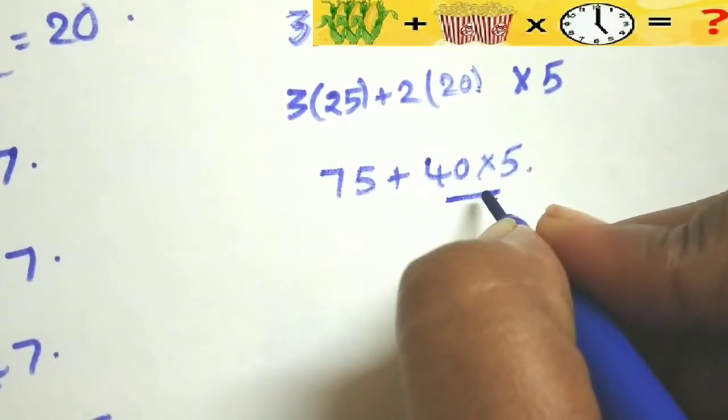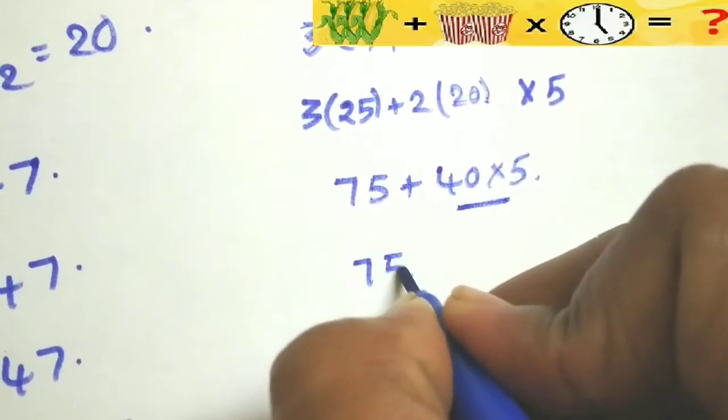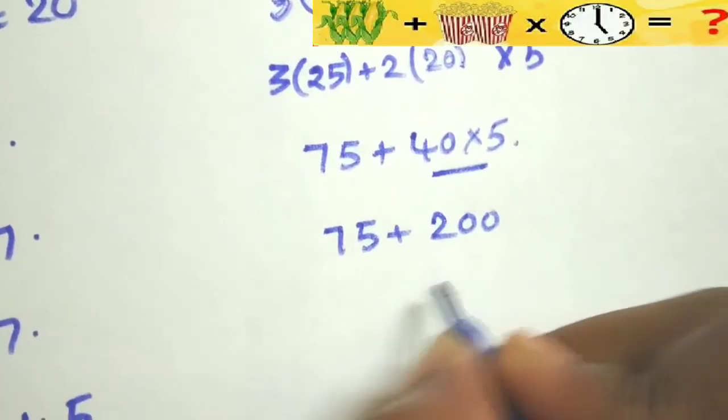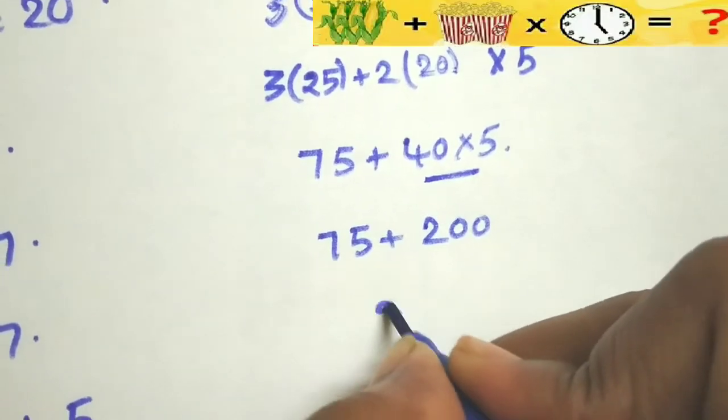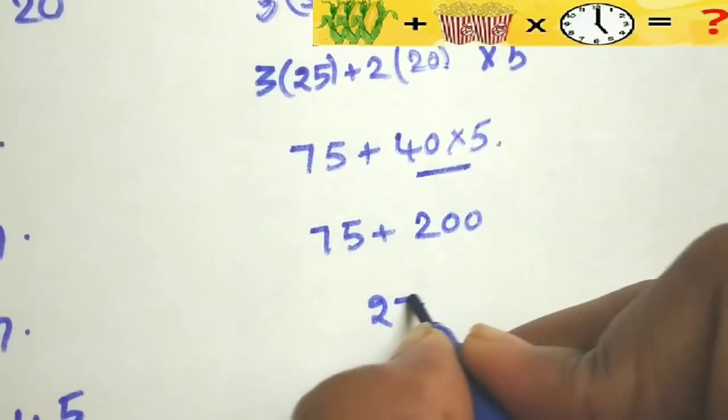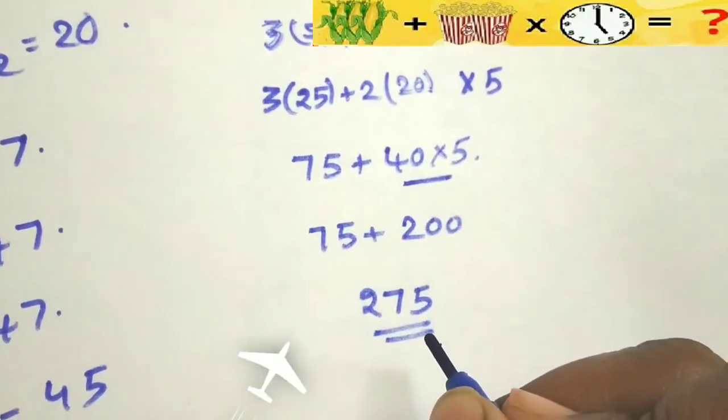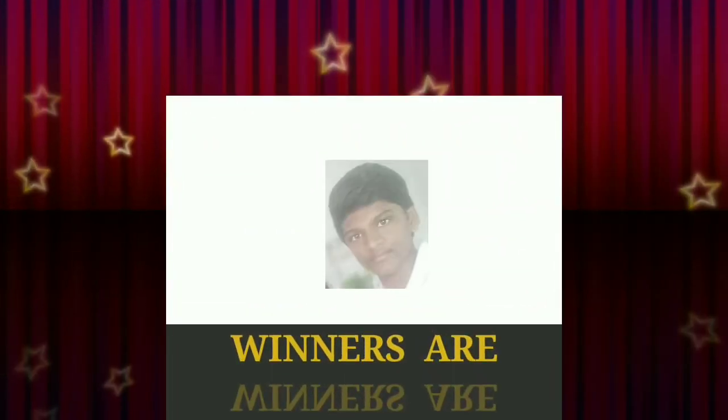According to BODMAS rule, first you have to multiply. So 75 plus 40 into 5 is 200, so 200 plus 75 is 275. 275 is the answer for our puzzle. Thank you for watching, puzzle winners are...